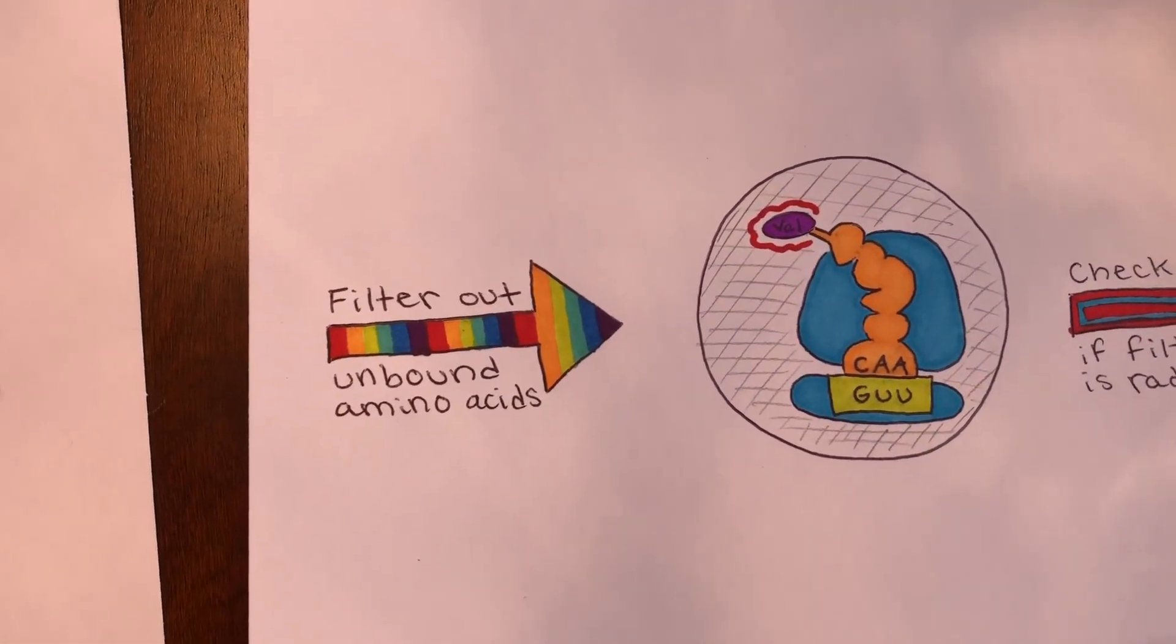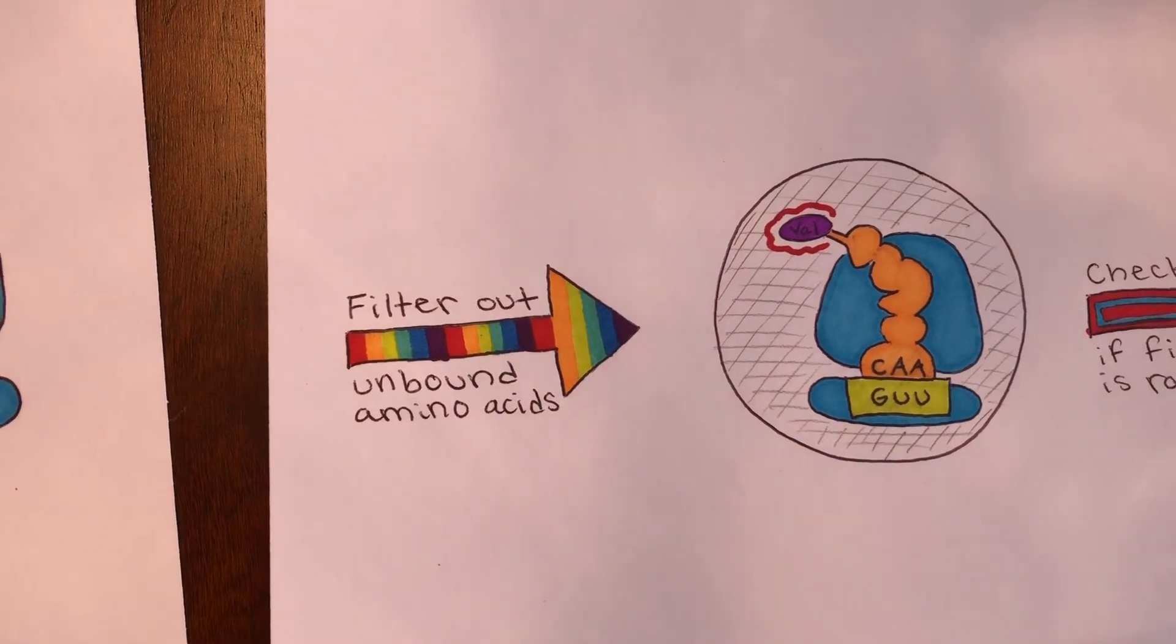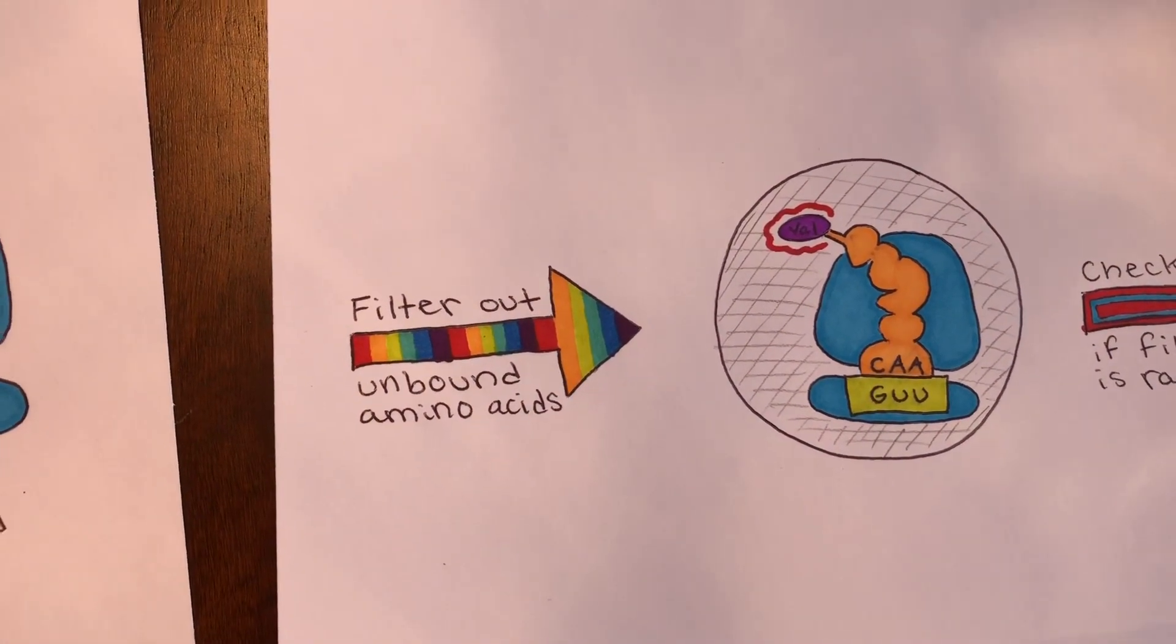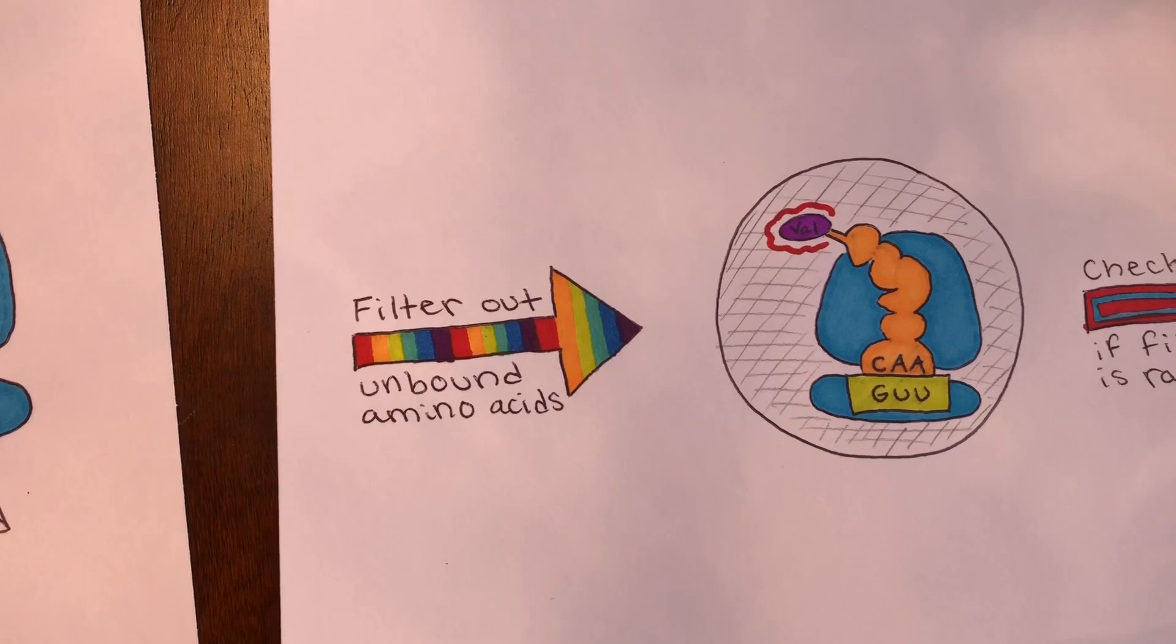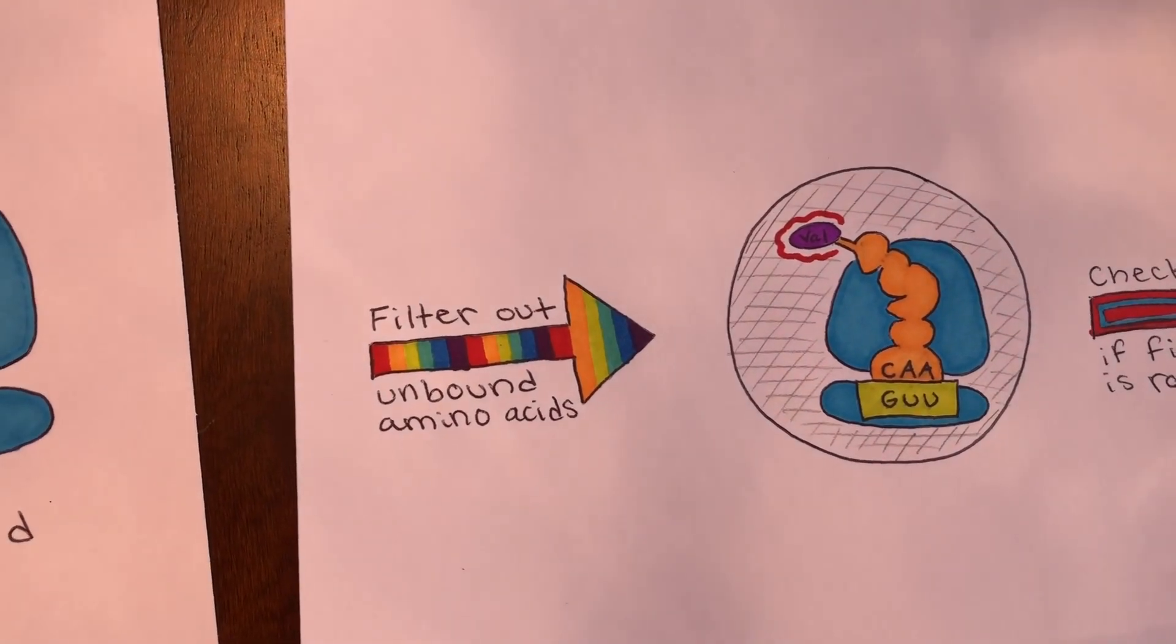After binding occurred, the mixture was then passed through a nitrocellulose filter. The tRNAs bound to the ribosome-bound mRNA were caught in the filter, whereas the unbound tRNAs passed through it.